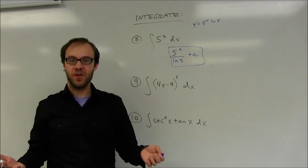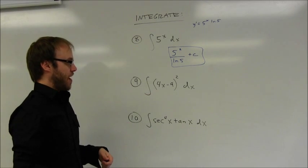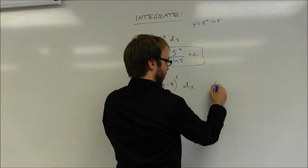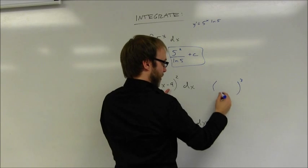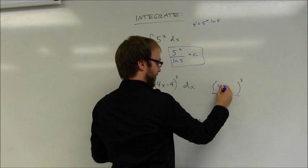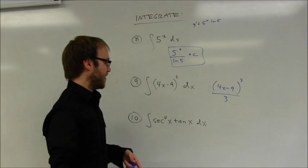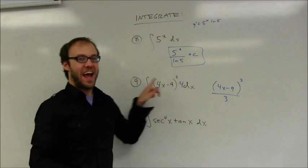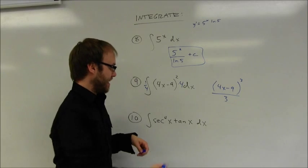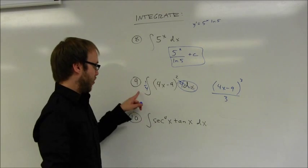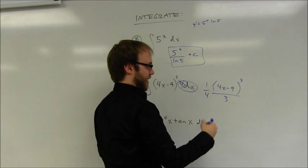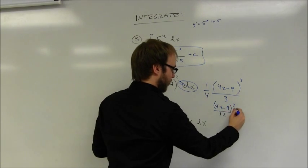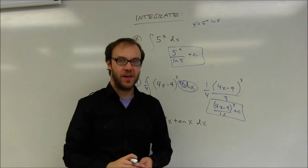The next example is reversing the power rule and the chain rule. I have something raised to the second power — think of it as u squared — so the integral gives u to the third power divided by 3, with the inside function staying the same. The derivative of the inside function is 4, so I need a 4 dx, balanced with one-fourth. That one-fourth constant stays out front, the 4 dx gets pulled back in, and I get one-fourth times (4x minus 9) cubed, plus C. This can also be written as (4x minus 9) cubed over 12, plus C.